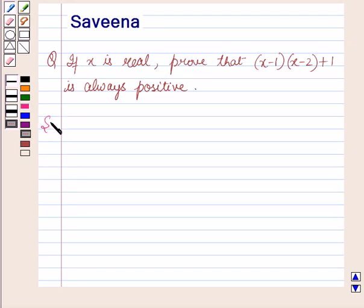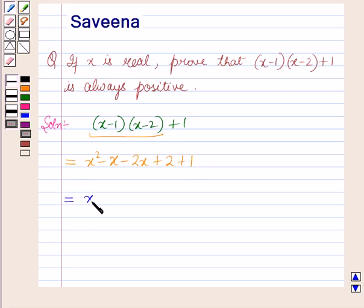Now we will start with the solution. Here the expression is given as (x-1)(x-2)+1, which on multiplying these two gives x² - x - 2x + 2 + 1, which is further equal to x² - 3x + 3.